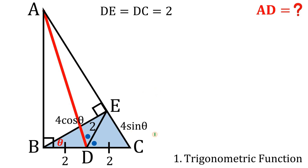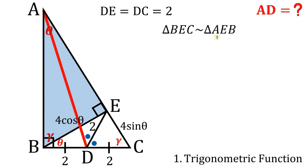Let's call angle B equal to gamma, so theta plus gamma equals 90 degrees, since these are the acute angles of a right triangle. Given right triangle ABC, if angle C is gamma then angle A is theta. Considering right triangle BEA, angle A is theta and angle ABE is gamma. So this small right triangle is similar to the big right triangle ABC and also similar to the medium right triangle BEC.